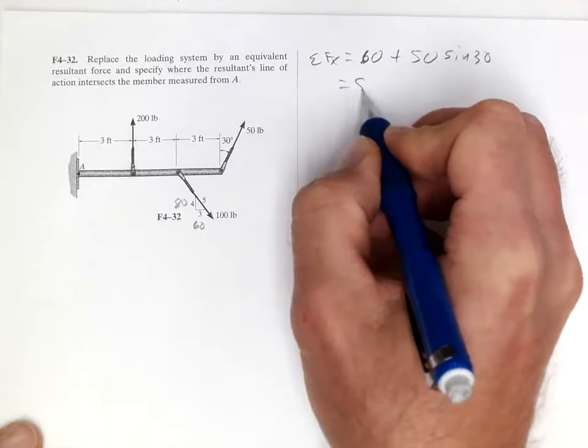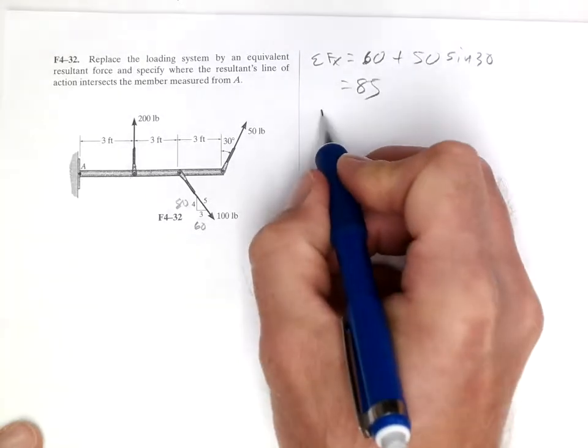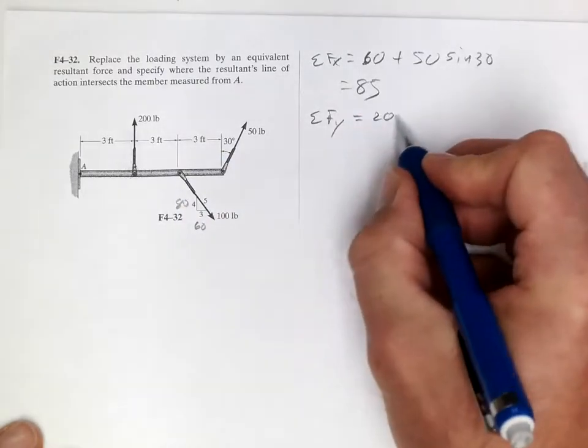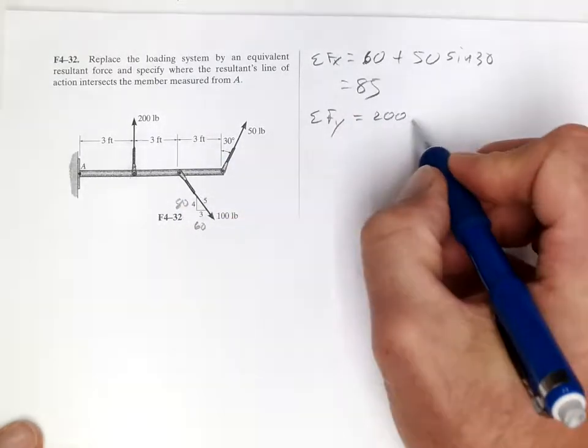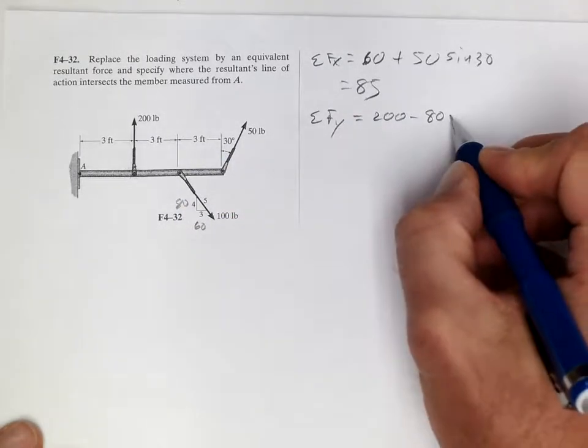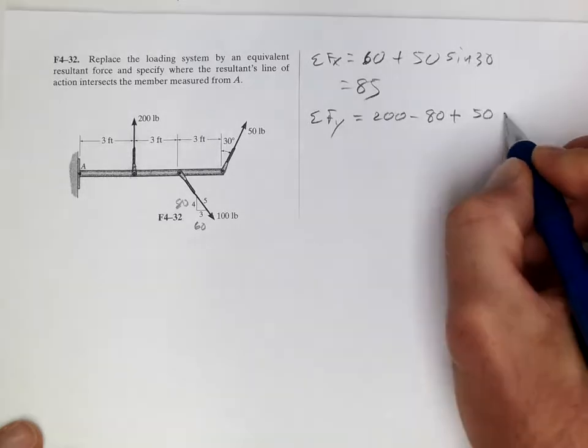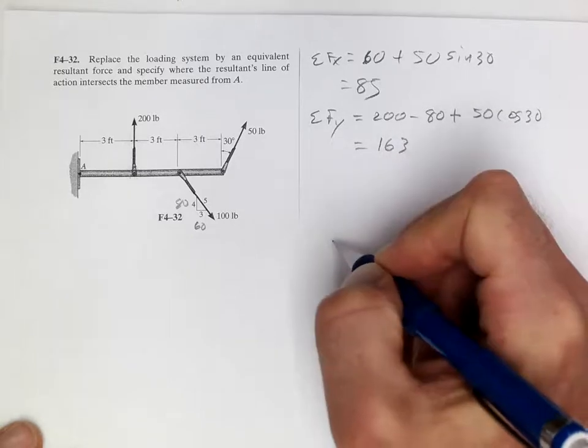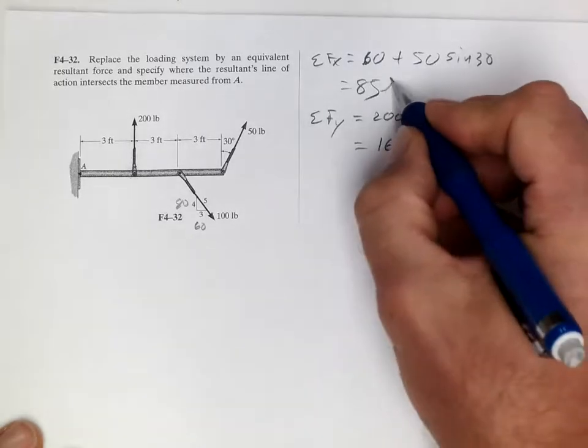If we sum the forces in the y direction, we got 200 up, 80 down, plus 50 cosine 30. And that equals 163. And those are both pounds.